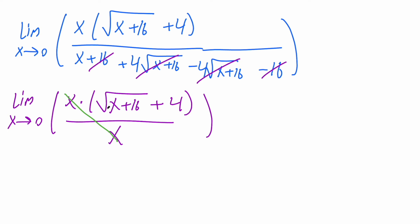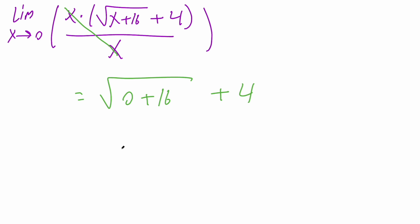Now all we need to do is replace x with 0. We get the square root of 0 plus 16, plus 4. The square root of 16 equals 4, and 4 plus 4 equals 8. That's our final answer.